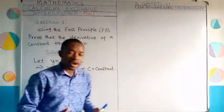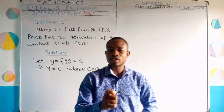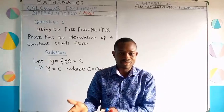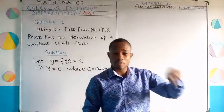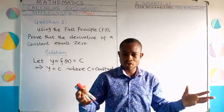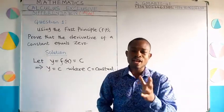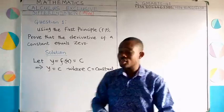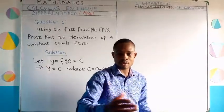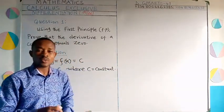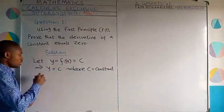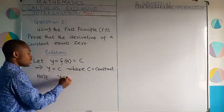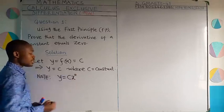When we derived the first principle, a change in the independent variable x will lead to a corresponding change in y, which we call delta x and delta y. But if you look at this function, y equals a constant, there is no x there. For the purpose of clarity, I want to introduce x into this function. Note that y equal to c is the same as y equal to c times x raised to the power zero.